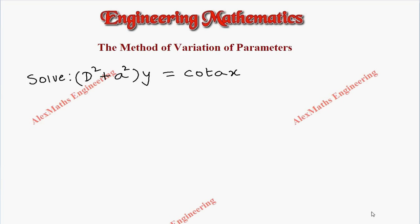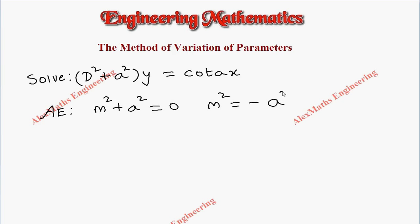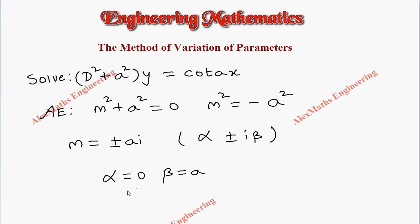Hi students, this is Alex here. In this video we are going to solve a problem using the method of variation of parameters. As a first step we have to write the auxiliary equation, which is m squared plus a squared equal to 0. From this, m squared is minus a squared and m is plus or minus ai.